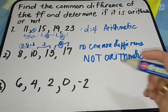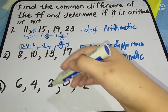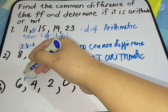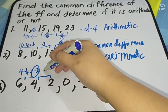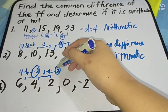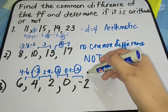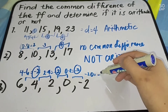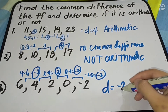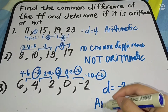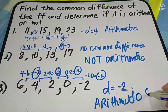Number 3: We have 6, 4, 2, 0, and negative 2. Let us find if we have a common difference. 4 minus 6 = negative 2; 2 minus 4 = negative 2; 0 minus 2 = negative 2; negative 2 minus 0 = negative 2. We have a common difference. D = negative 2. Therefore, this is an arithmetic sequence.